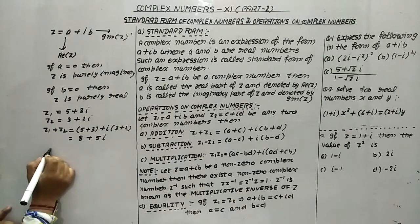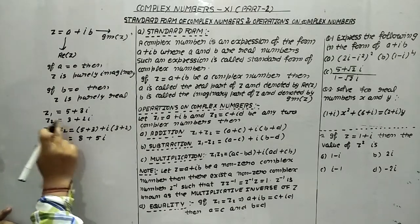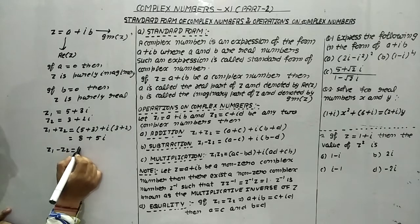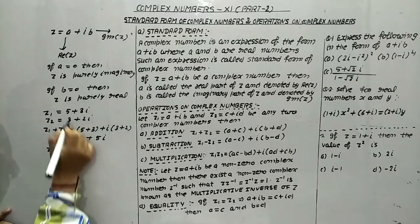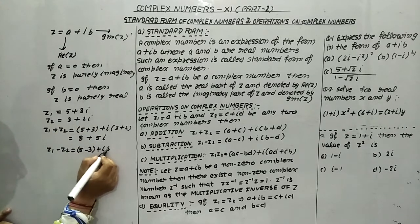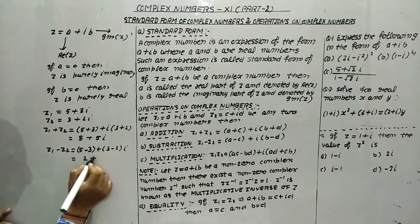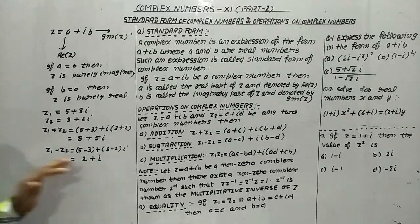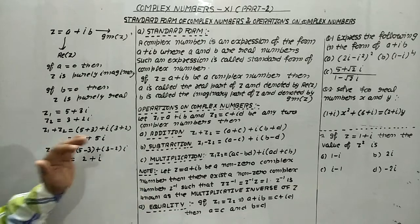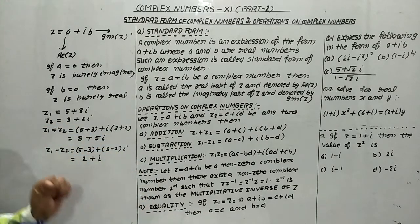In the same way, subtraction: z1 minus z2 means subtract the real parts and imaginary parts separately. So (5 minus 3) plus (3 minus 2)i gives 2 plus i. This is the subtraction of two complex numbers.